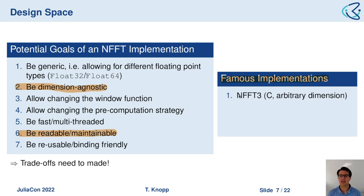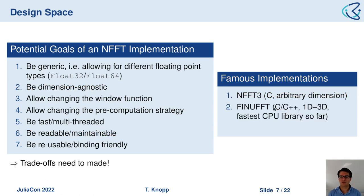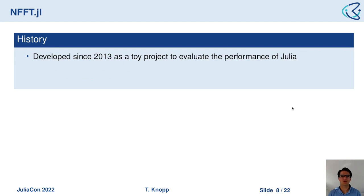Some famous implementations include the NFFT3 library — a C library supporting arbitrary-dimension data — and more recently the FiNUFFT library, written in C++, with 1D to 3D transforms and currently one of the fastest CPU libraries. There are also GPU libraries which will not be covered in this talk.